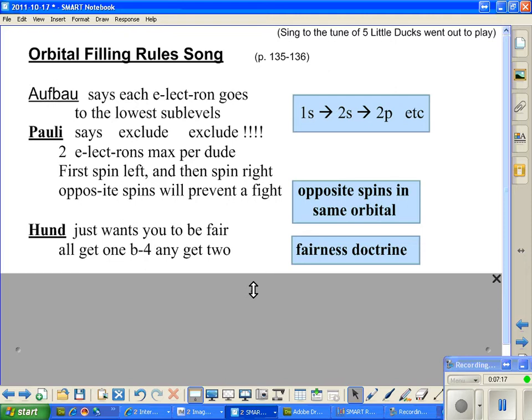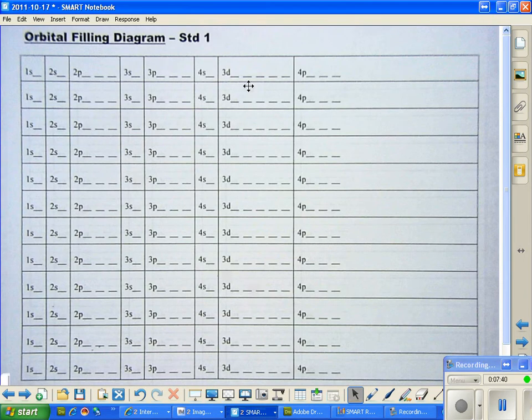So what Hund says is it's kind of like that with the electrons. Hund just wants to be fair. All get one before any get two. And that's the way we have happy electrons in our sub-levels. So the first orbital gets one. The second orbital gets one. The third orbital gets one. If there's three in an orbital, like you see in the p's, see the 2p has three orbitals.